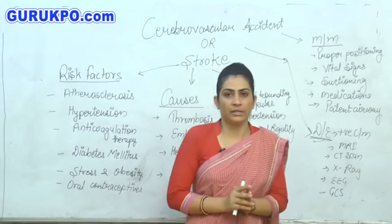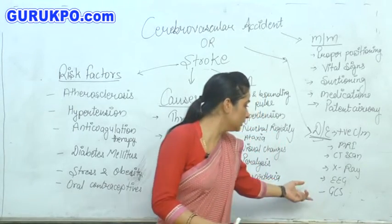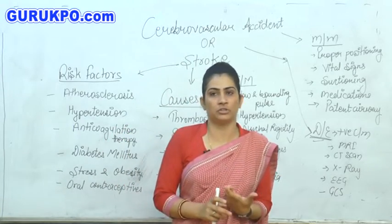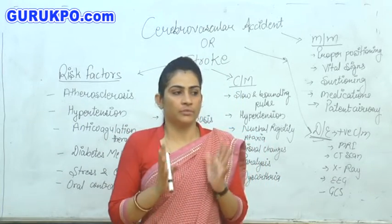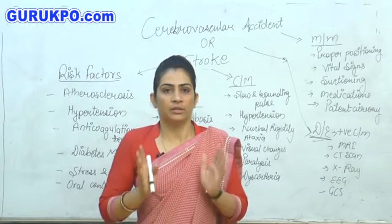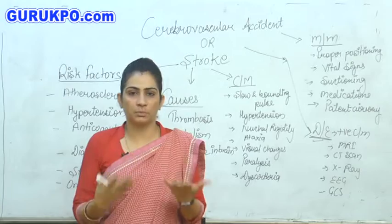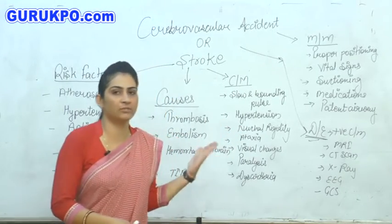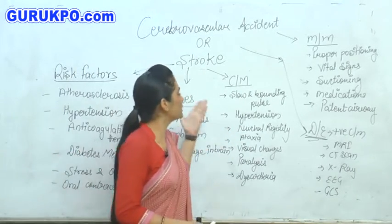EEG means electroencephalography. Next, we would take the Glasgow Coma Scale of the patient — we will assess disorientation if present or not, and the verbal response of the patient, including how the patient speaks. These all are the diagnostic evaluations of stroke or CVA.